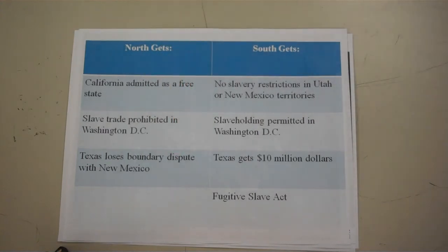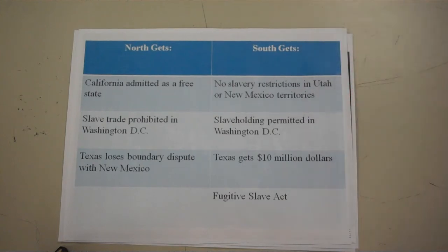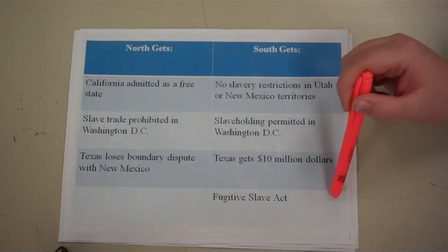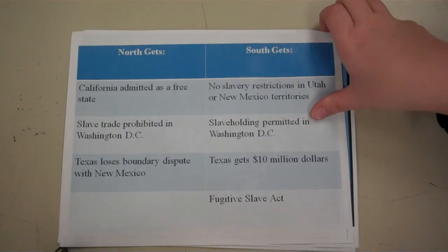Texas would give up territory in New Mexico and Colorado, setting the present-day boundaries of Texas, and in exchange the U.S. would pay Texas $10 million. Lastly, the Fugitive Slave Act was created. Both sides felt they had to give up too much in this compromise, but both sides agreed to support it to avoid further sectional problems.